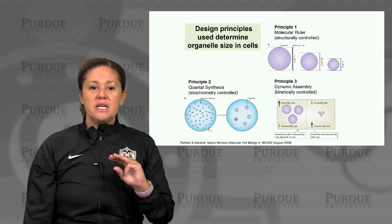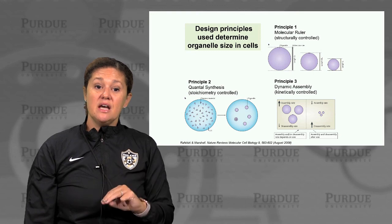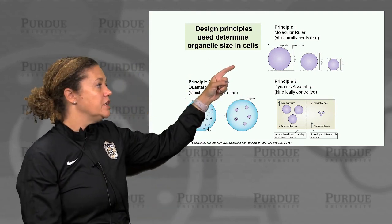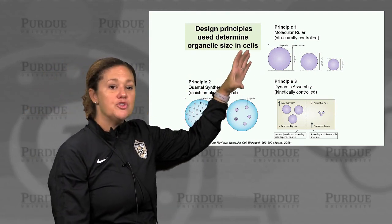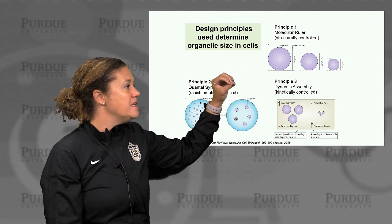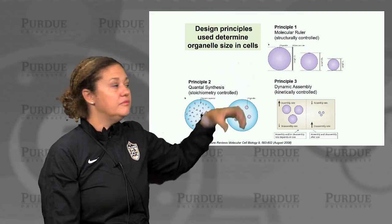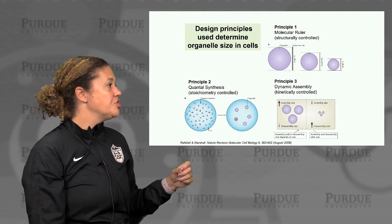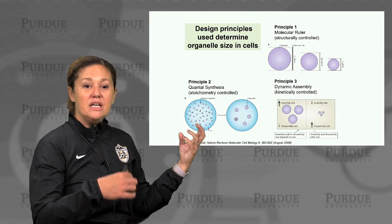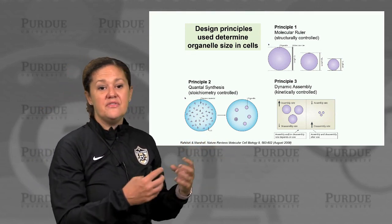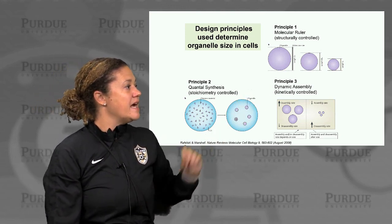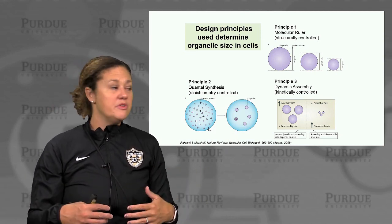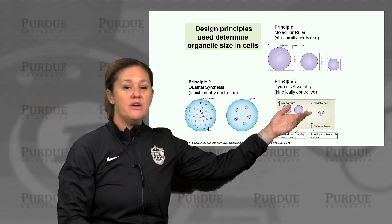We're going to look at three fundamental design principles used in cells to control organelle size. The first is the molecular ruler — structurally controlled, where a particular protein or structure of set size determines the size of an assembling organelle. The second is quantal synthesis — controlled by stoichiometry, where the stoichiometry of starting monomer influences the size of the assembled organelle. The third is dynamic assembly — kinetically controlled, where the rates of assembly and disassembly, and the equilibrium of those rates, results in control of the ultimate organelle size.